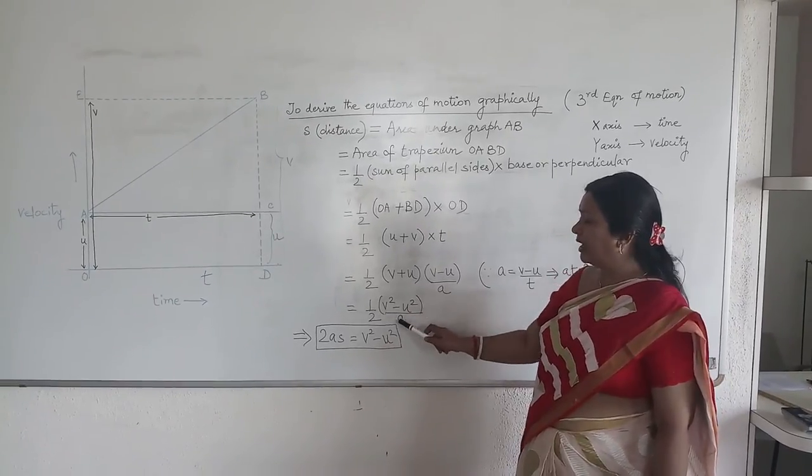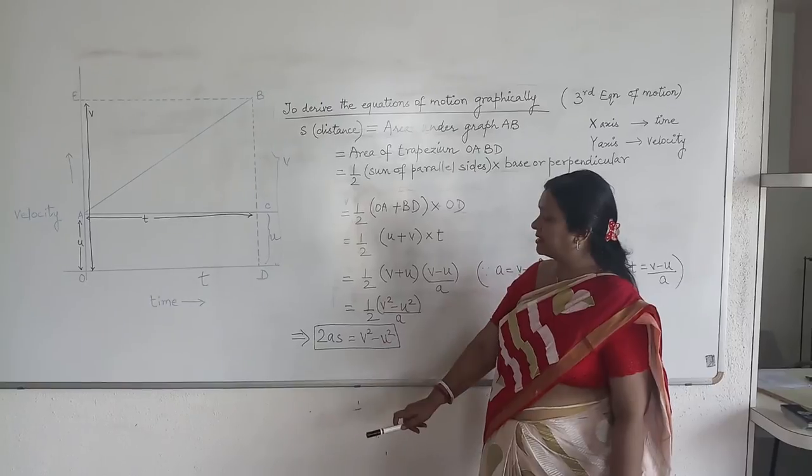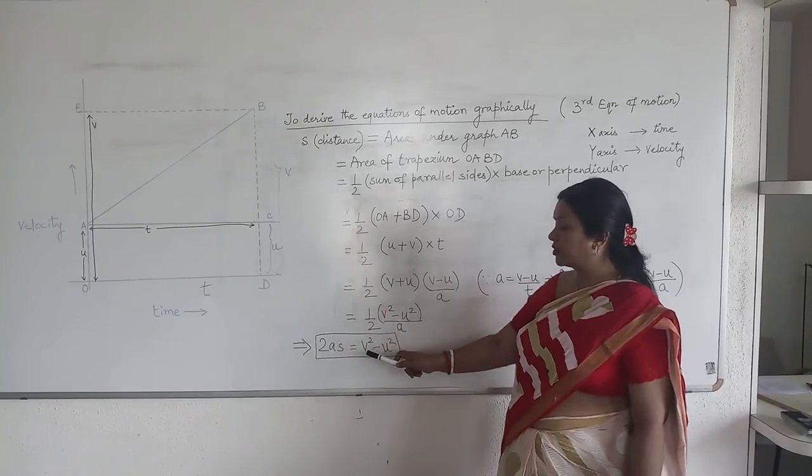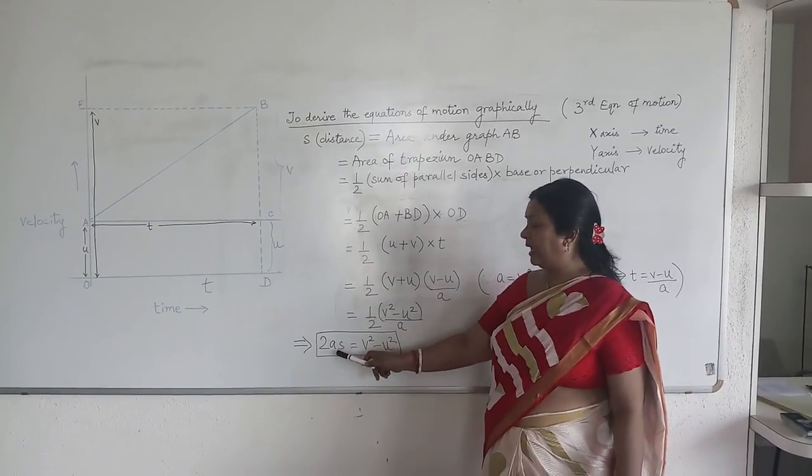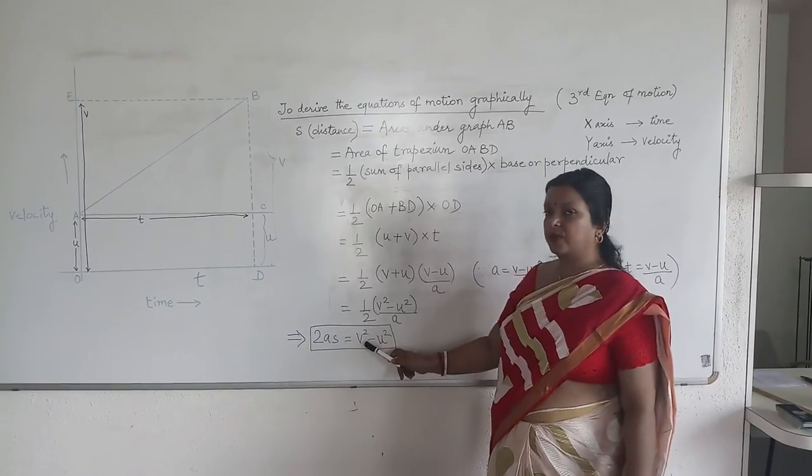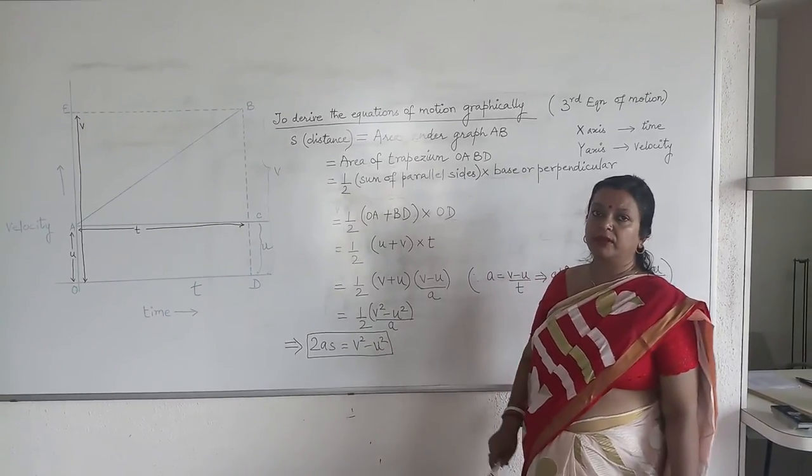Now we take this 2A on the other side. We already had S on the left hand side. So we have the final equation of motion. That is, 2AS is equal to V square minus U square.